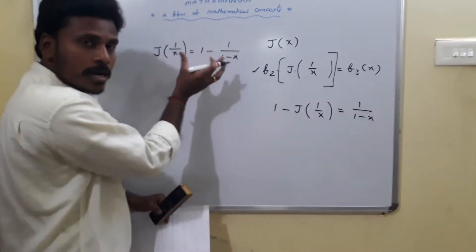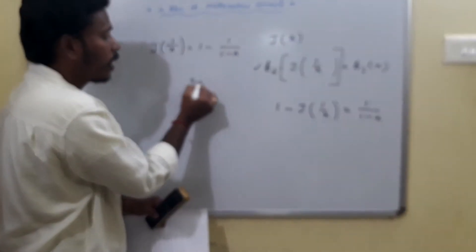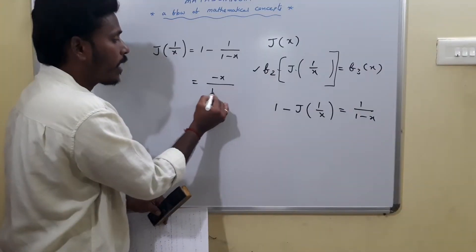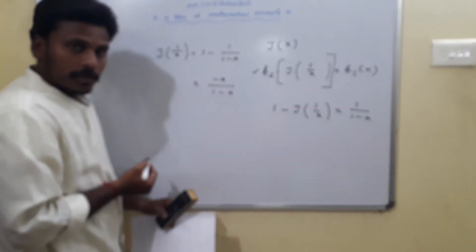And if you take LCM as well as simplification, 1 minus x minus 1, which in turn gives us minus x by 1 minus x. This is J of 1 by x.